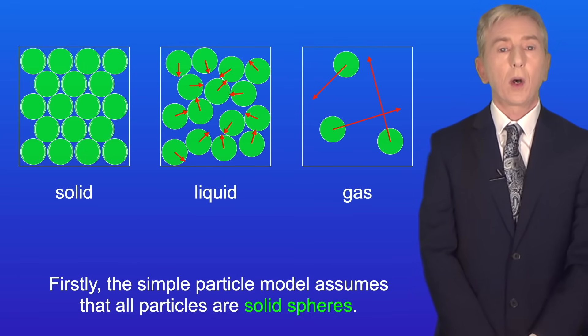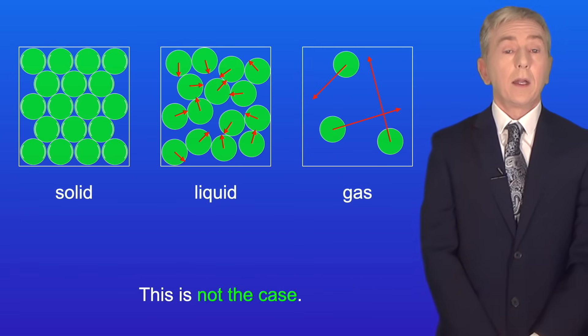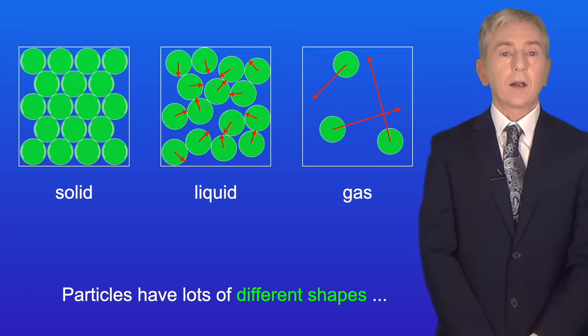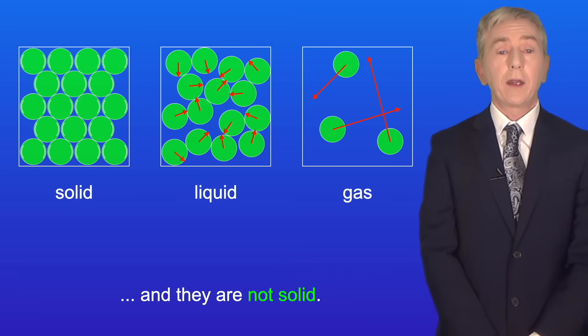Firstly, the simple particle model assumes that all particles are solid spheres. Now, this is not the case. Particles have lots of different shapes, and they're not solid.